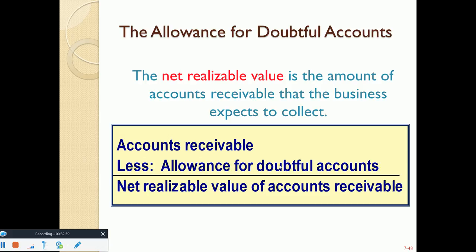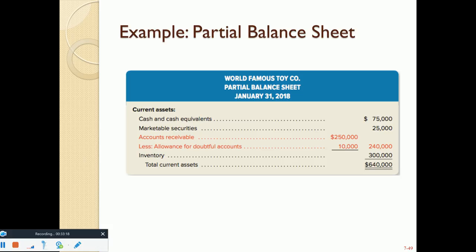Here's the partial current asset section of the balance sheet: Cash $75,000, Marketable Securities $25,000, Accounts Receivable gross $250,000 less Allowance for Doubtful Accounts $10,000, reported at net realizable value of $240,000, plus Inventory. As stated earlier, receivables are always reported at net realizable value.